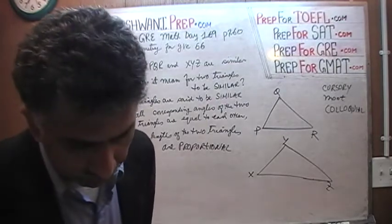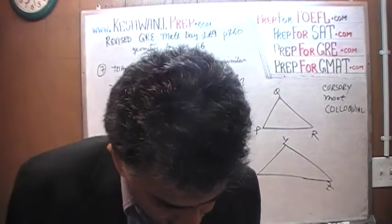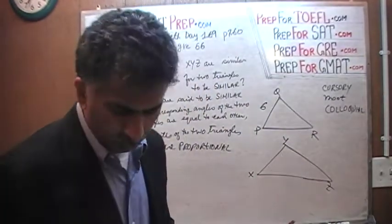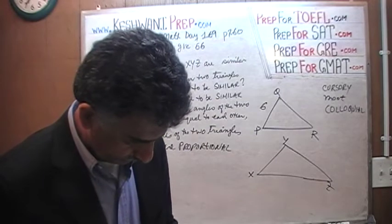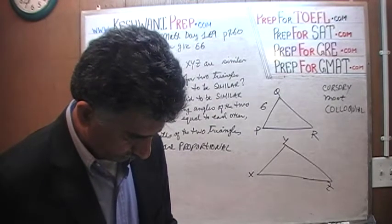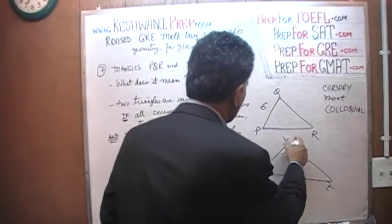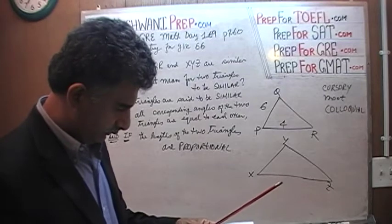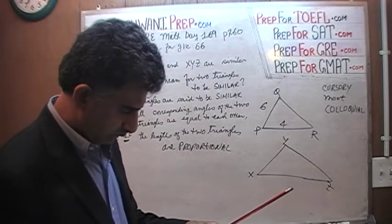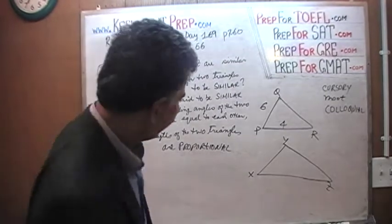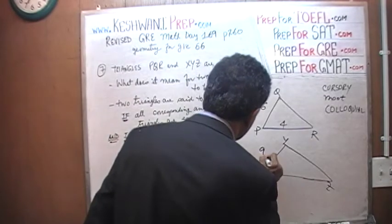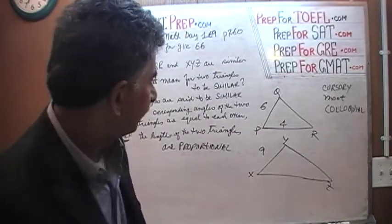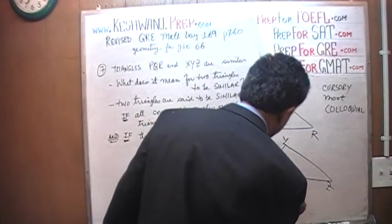What else do we know? We are told that PQ is 6 — P to Q is 6. We are told that P to R is 4. And then they go on to tell us that X to Y is 9. If X to Y is 9, how much is X to Z — the bottom part right here?